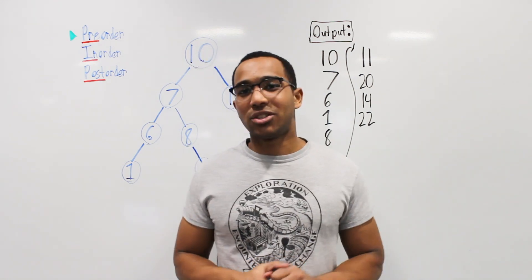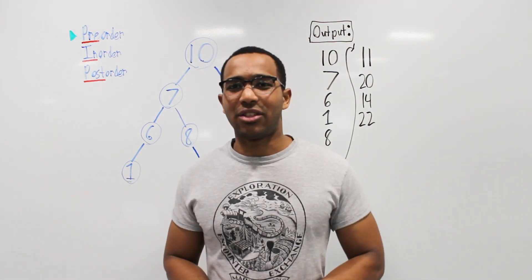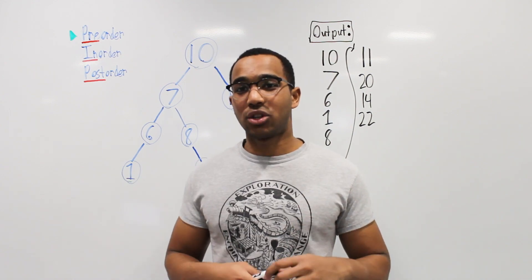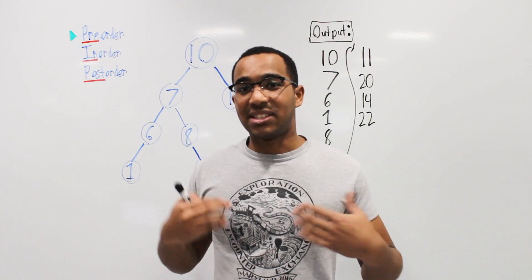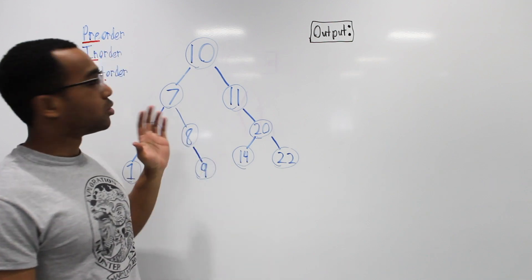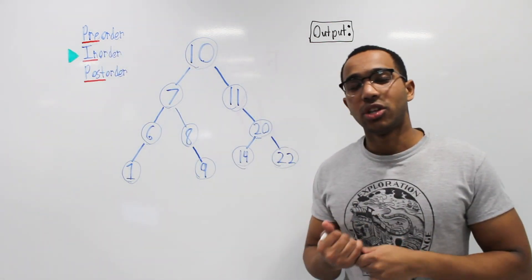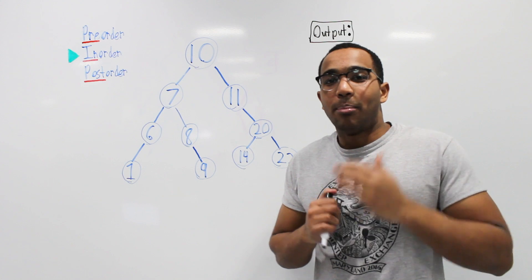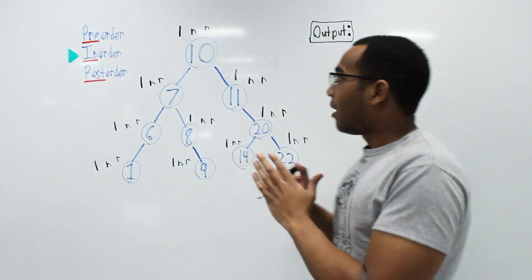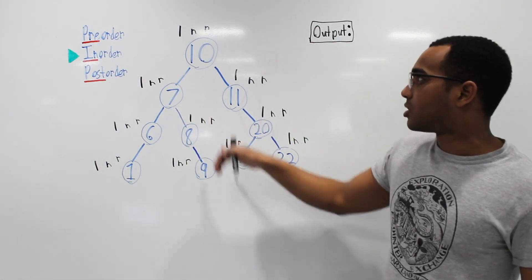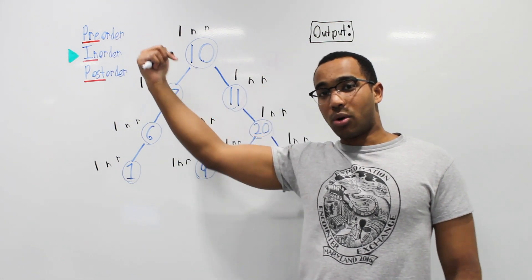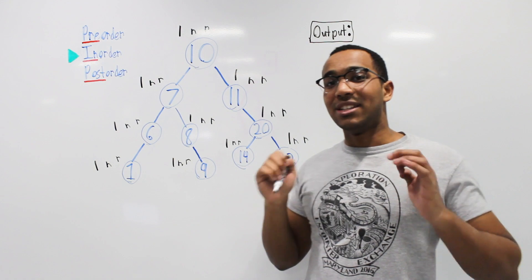You don't really need to memorize these traversals — you can get the hint from the name. Now let's do an in-order traversal. All that changes is a different policy at each node. For in-order: go left, visit the node, then go right. That is the only difference.